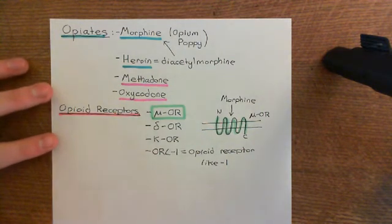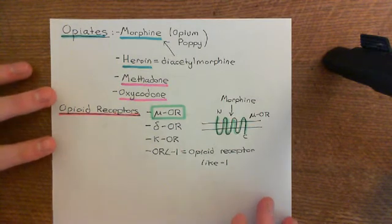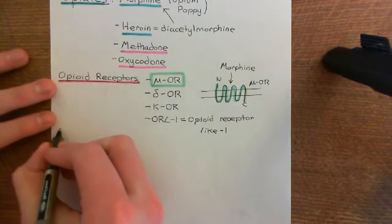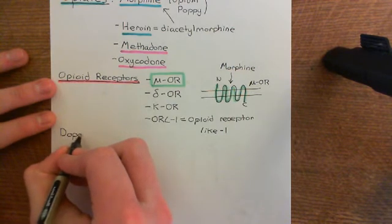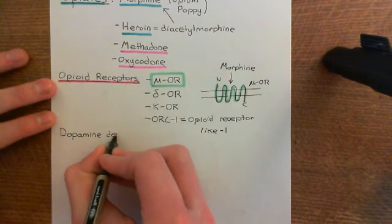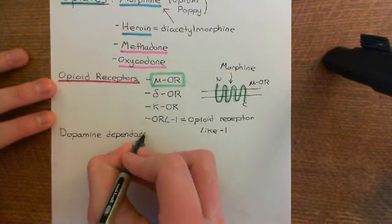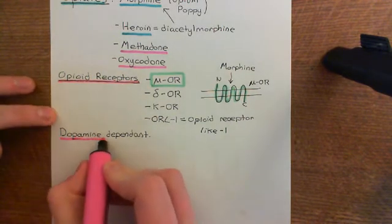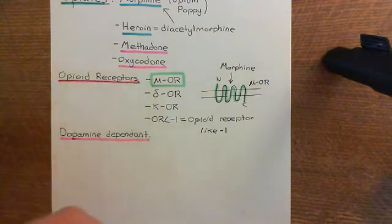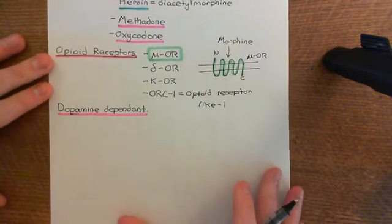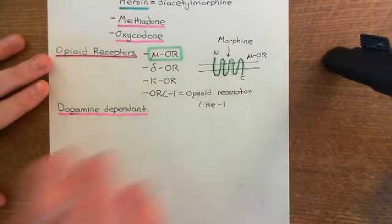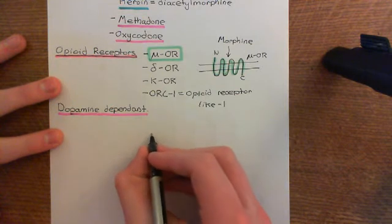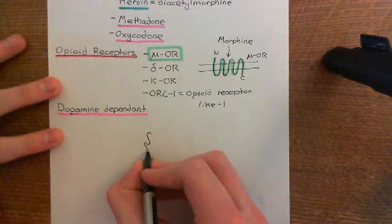Now we want to see how addiction actually develops to these opiate drugs. Firstly, I want to tell you the pathway which does involve dopamine, and then the pathway which doesn't involve dopamine. Starting with the dopamine-dependent pathway — this is actually identical to the pathway by which cannabinoids such as tetrahydrocannabinol cause addiction. So if this is our dopaminergic neuron within the ventral tegmental area, here's a dendrite with a dendritic spine, and here's the axon terminal.